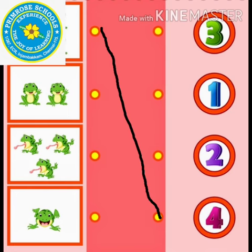Next, how many frogs are there children? One, two. Are you able to identify number two? Yes, then match it.